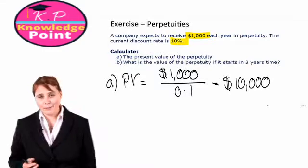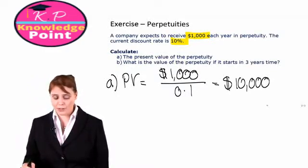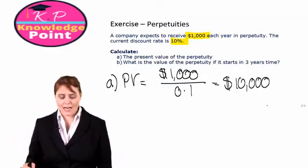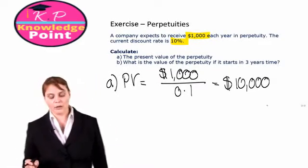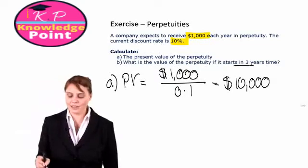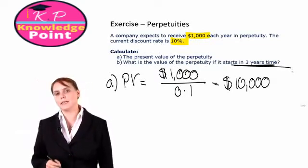What about part B? That's going to be a little less straightforward, unfortunately. We're asked, what is the present value of the perpetuity if it starts in three years' time?